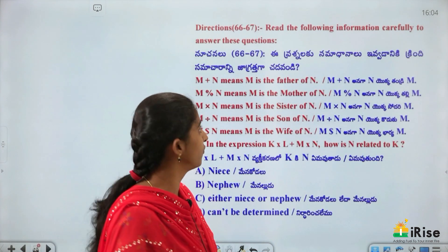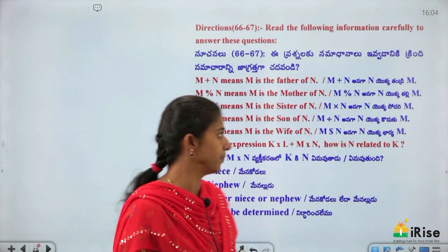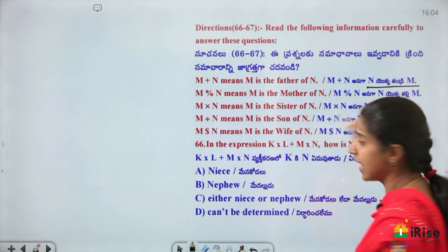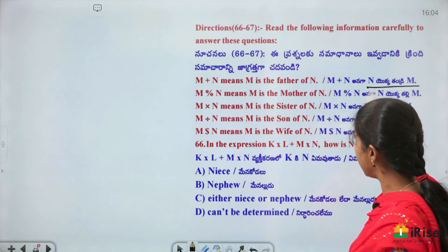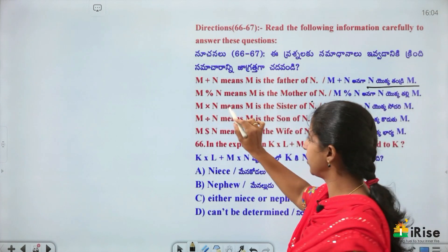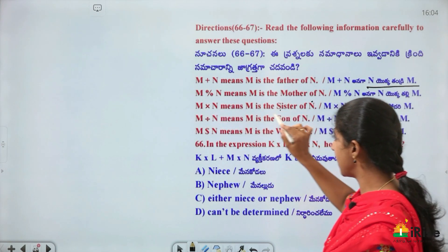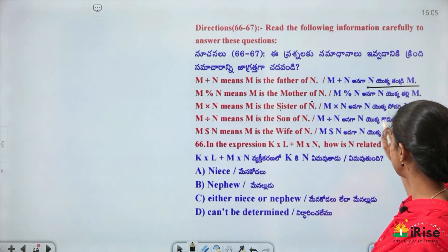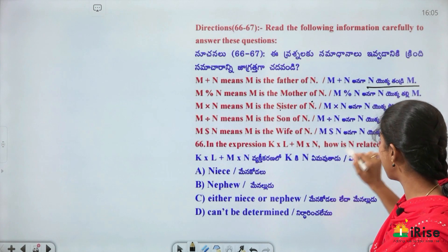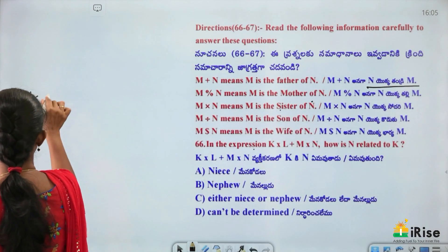Blood relations coding: M + N means M is the father of N. M % N means M is the mother of N. M × N means M is the son of N. M ÷ N means M is the son of N (koduku). M $ N means M is the wife of N. In the expression K × L + M × N, how is N related to K?